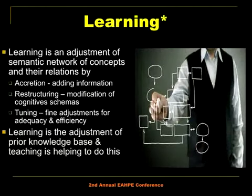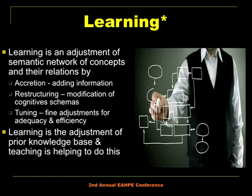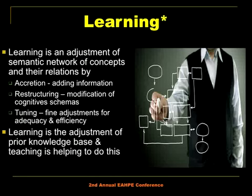We look at learning as an adjustment of networks and concepts. This is done by accretion — adding information to what you already have; restructuring — modification of what is in your mind; and tuning — adjustment for adequacy and efficiency. Since we are teaching adults who come with background knowledge, many times they just restructure what they have. Learning is the adjustment of prior knowledge base, and teaching helps to do this. When we use peers to teach others, it helps even the teacher to adjust and learn better.